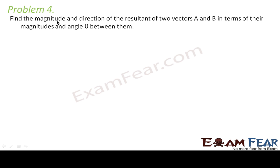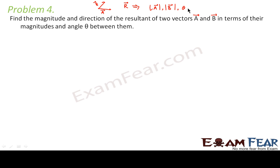The fourth problem asks: find the magnitude and direction of the resultant of two vectors A and B in terms of their magnitudes and angle theta between them. Please try to understand the question very carefully. We have two vectors A and B, and we have to find the resultant R in terms of the magnitudes of A and B and the angle theta between them. Normally we write the magnitudes of A and B as simple A and B instead of writing them within modulus.